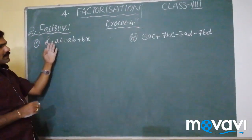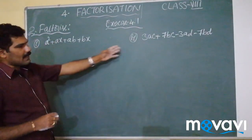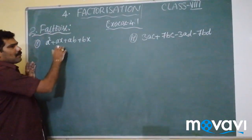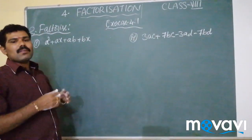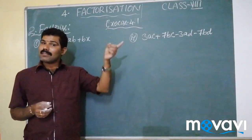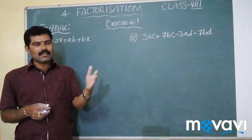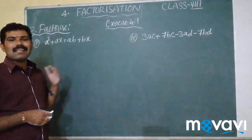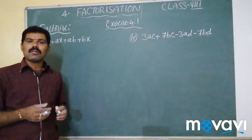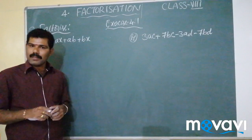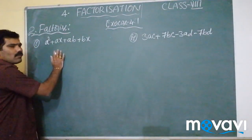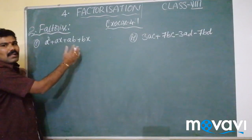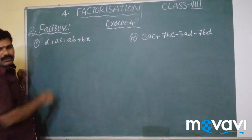We need to factorize the first and second problem. In the previous method we took the first method of factorization, that is taking the common factors out. Here what we need to do is the second method, that is factorization by grouping. First, what we have to do is group the terms which are having common factors.